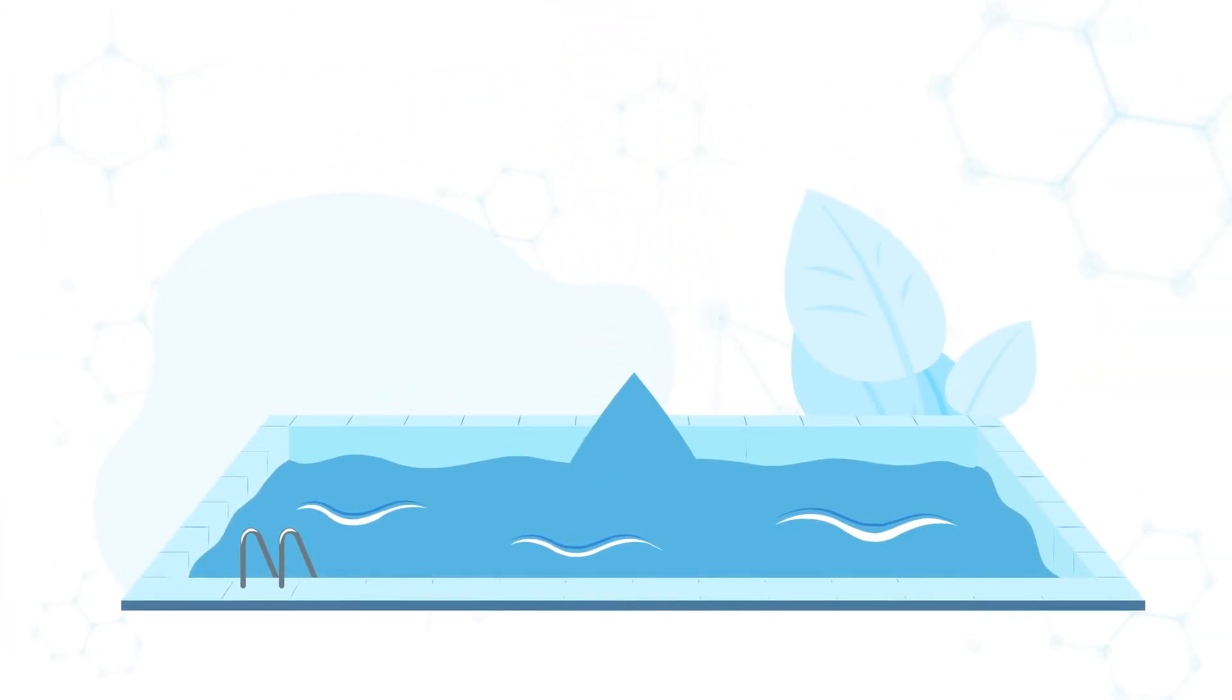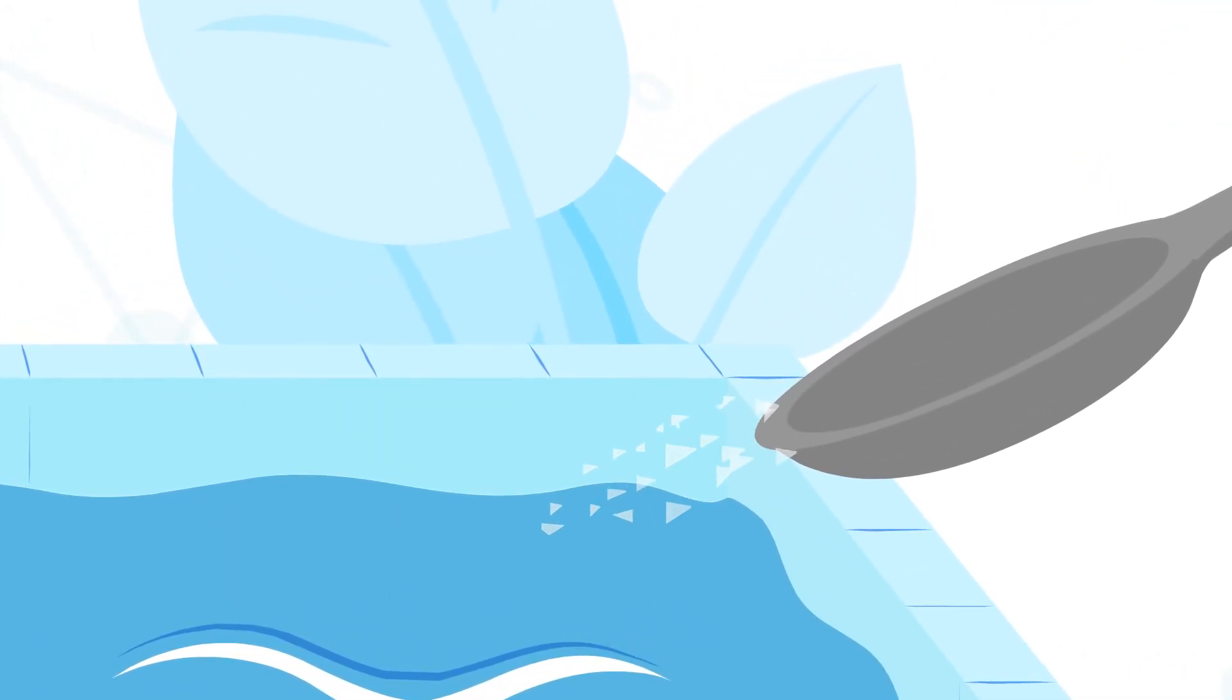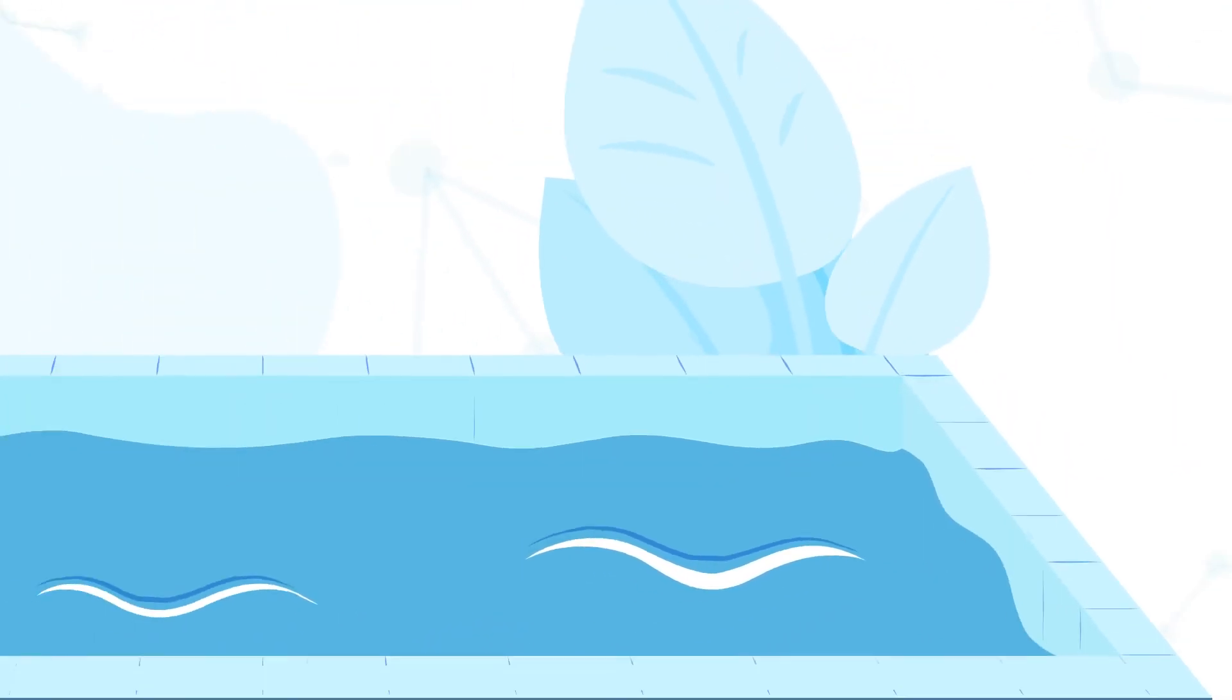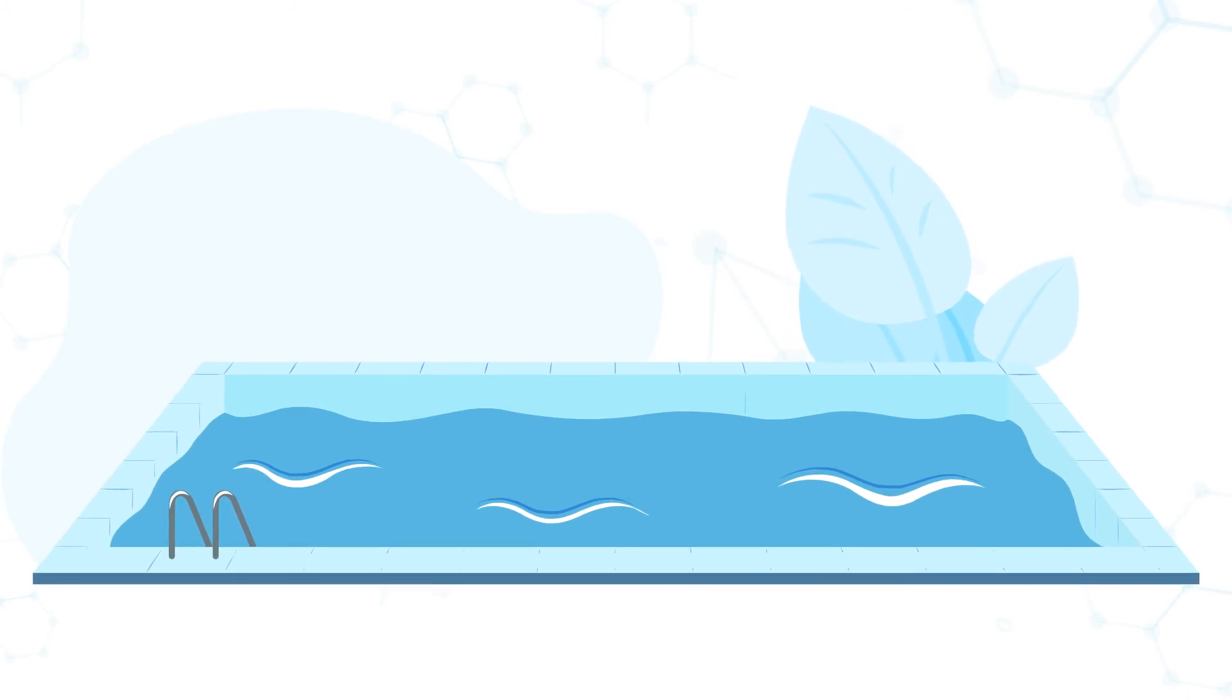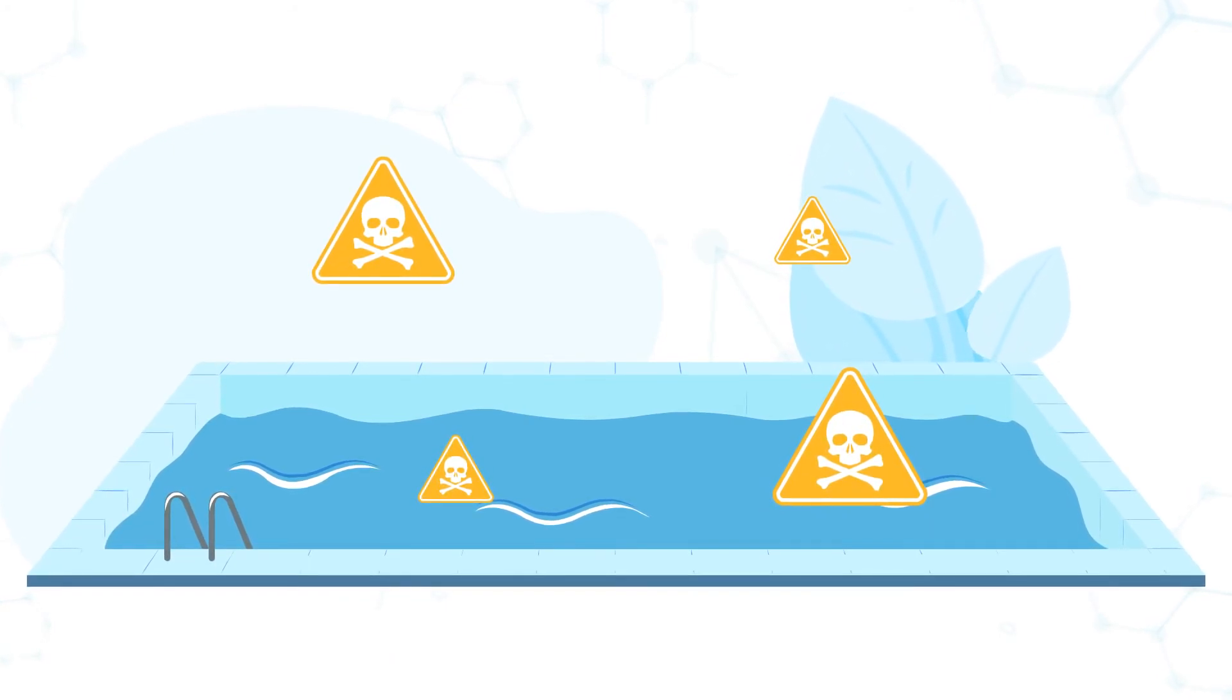To illustrate that, one part per billion is like a drop of water in an entire swimming pool. So adding about a sixth of a teaspoon of lead would be enough to contaminate that entire pool.